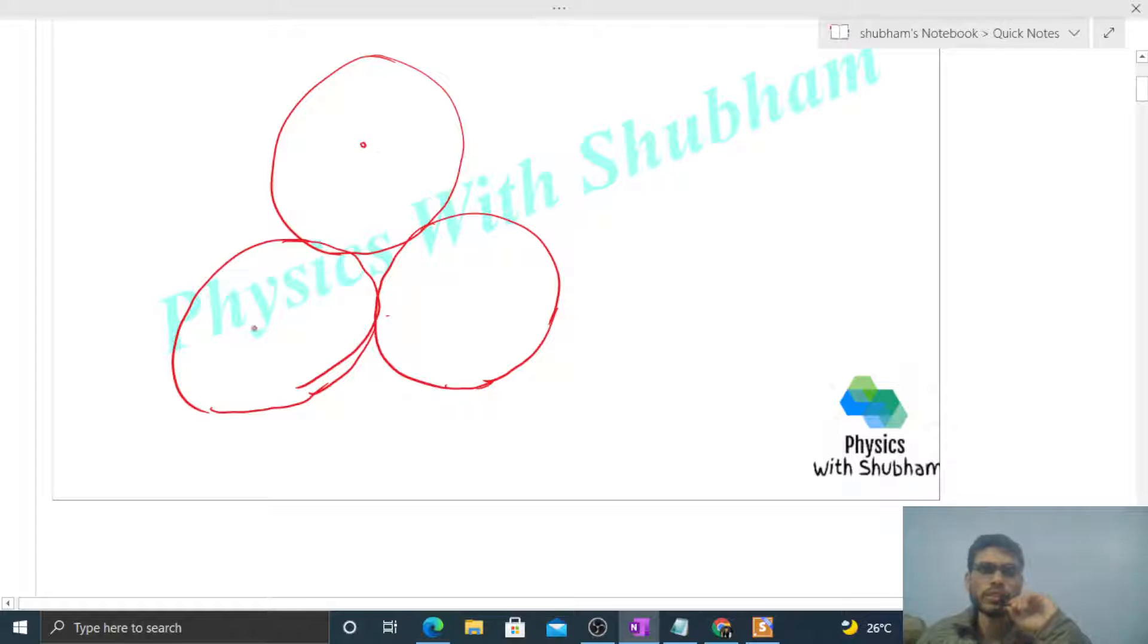See, so this center - you can see the distance. This radius A and this radius A. Similarly here, this radius A and this radius A, and this radius A and this radius A. The mass of each sphere is given as capital M.